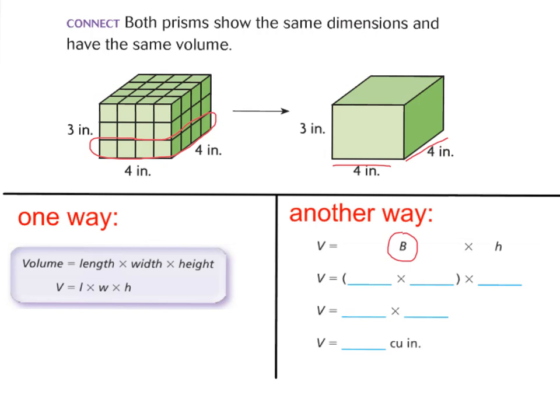If you look at this whole rectangular prism without showing the cubes, you can still find the volume using the formula. You can not only do length times width times height, but you can find your base, which is your length times width (4 times 4), and then multiply that by your height, which in this case is 3.